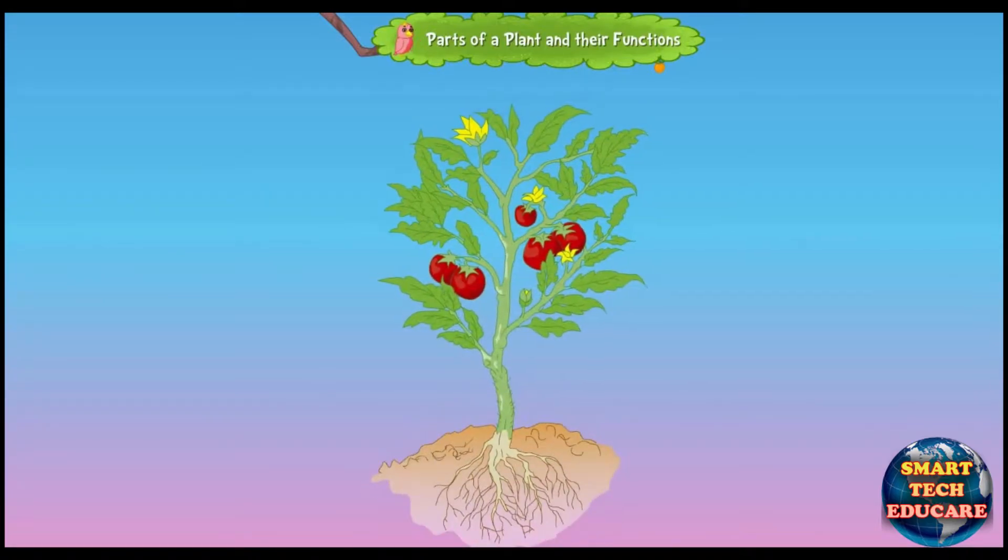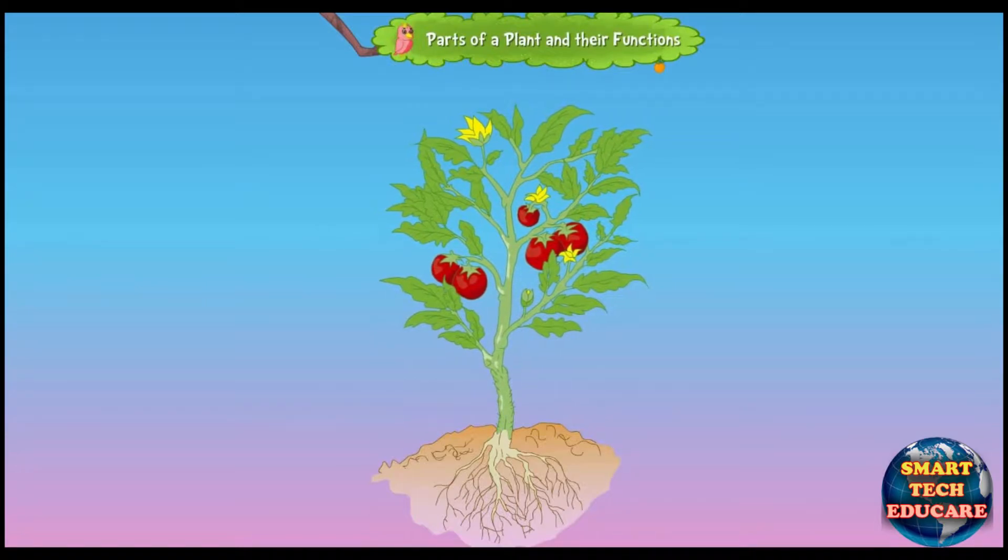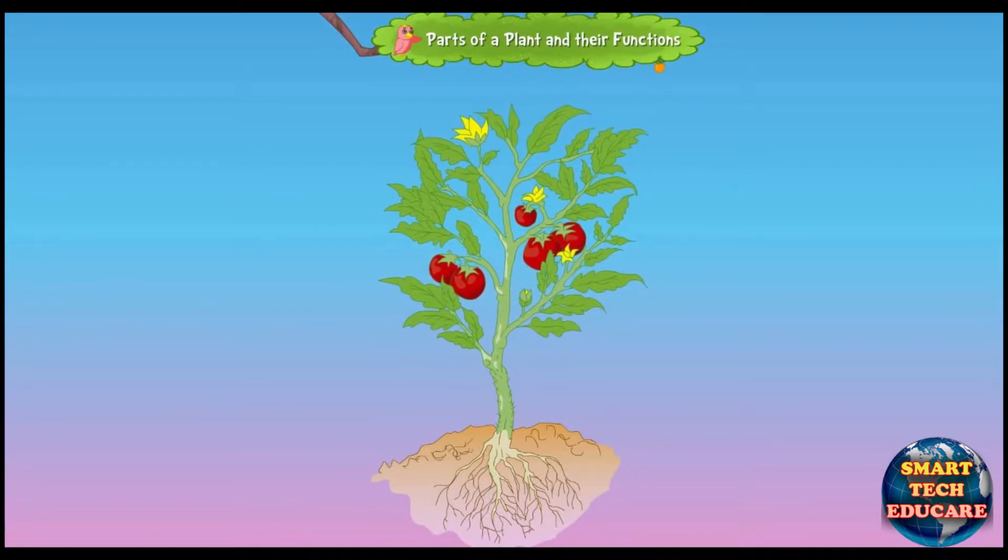Parts of a plant. Root is the most important part of the plant which supports the plants above the ground and supplies water and minerals from the soil to the other parts of the plant.